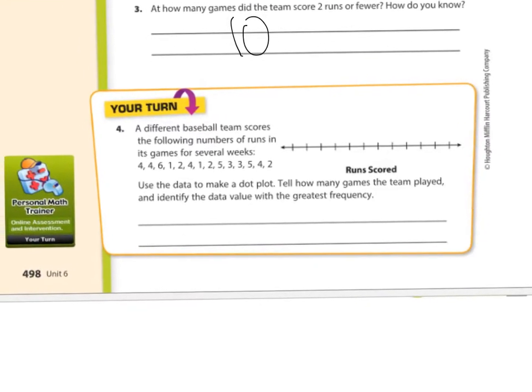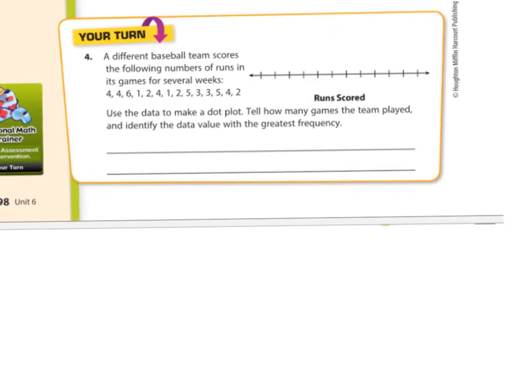A different baseball team scores the following number of runs in its games for several weeks. So you have all those numbers and then we're going to have to make a dot plot. What are we going to count by here? Like should we even have a zero on there? There's no zeros here. I guess you can if you want to, but we got to make sure we go all the way up to the biggest number, which is a six. So we can count by ones.